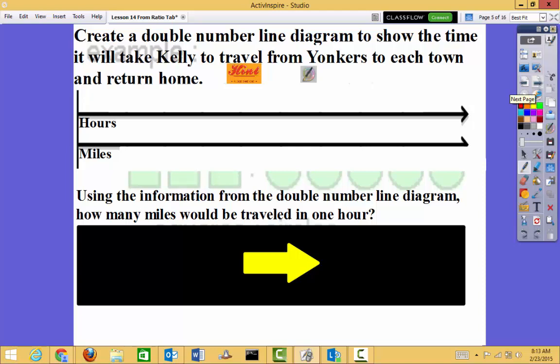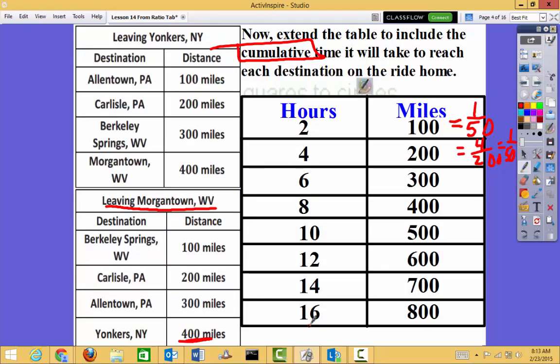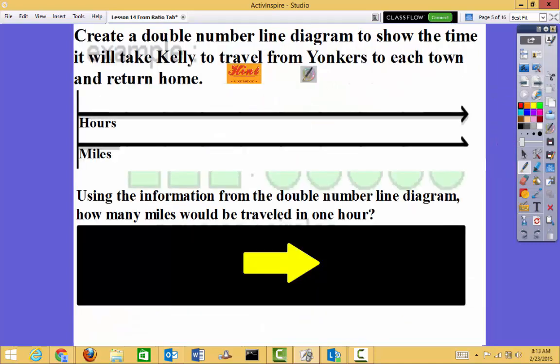Notice asking us to create a double number line diagram to show the time will take Kelly the child from Yonkers to each town and return home. So I'm just taking my ratio table and converting it to a double number line. So save us some time. You'll notice I have 2, 4, 6, 8, 10, 12, 14, 16.